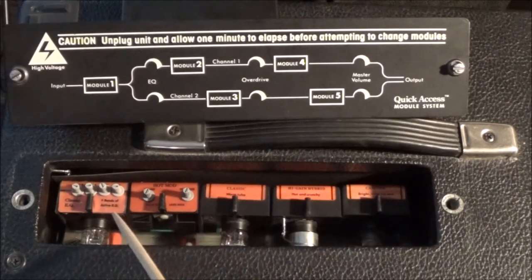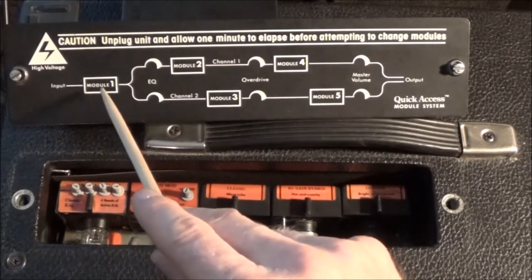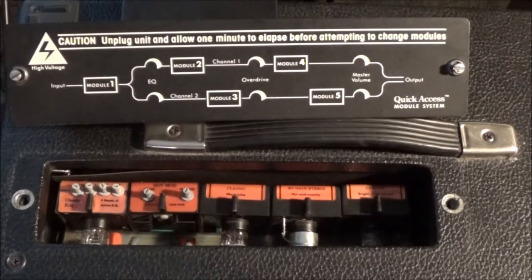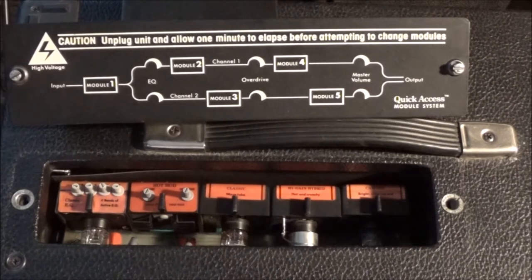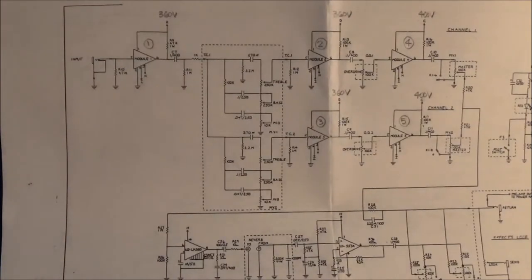As I said, it just depends on what you have in here, but module 1 is always the first thing in the signal chain. Now I can show you on the schematic also what's going on here.